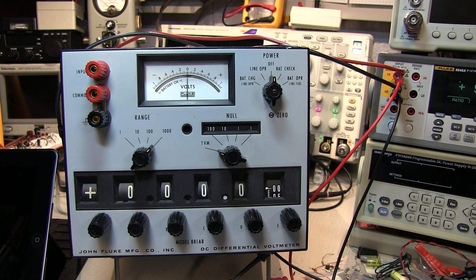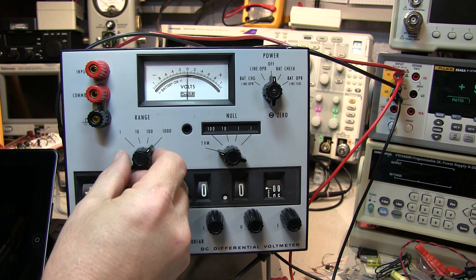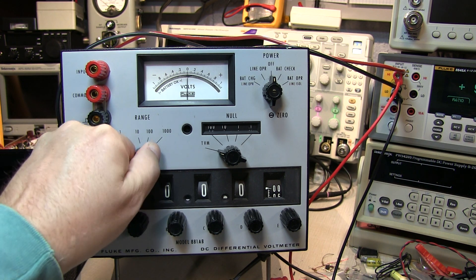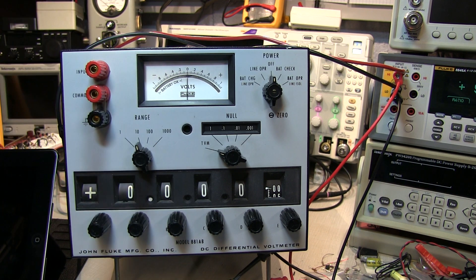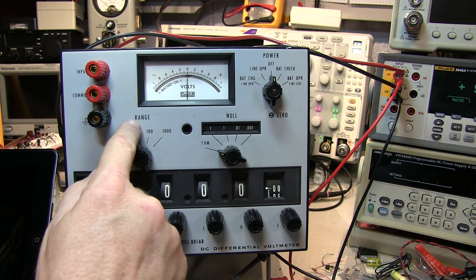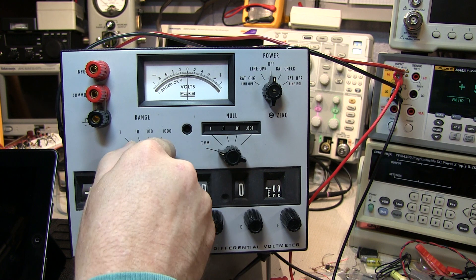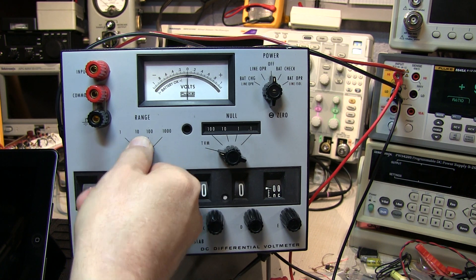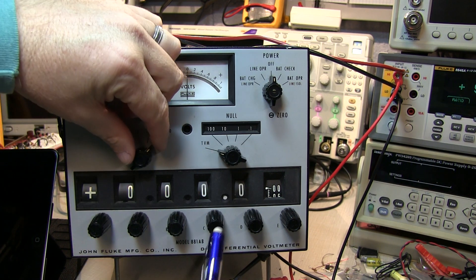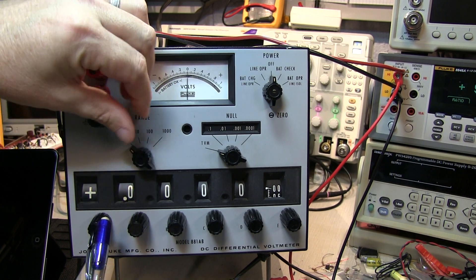One of the things I think is really cool about this instrument is that it's a nice blend of both mechanical and electronic operation. Changing the knobs will also change some of the scales that appear on the front panel. Notice as we change the range, the null range indicator rotates here. Also as we change the range, the decimal point moves from one place to another.